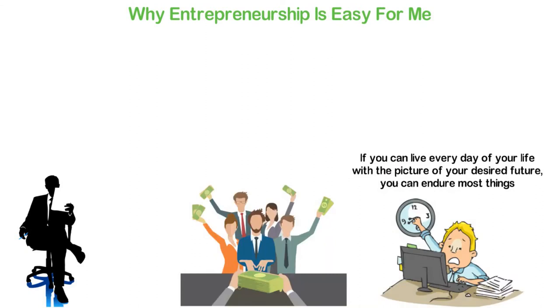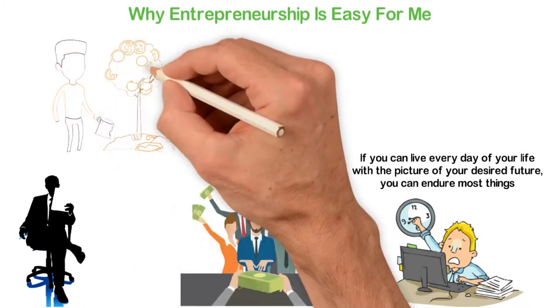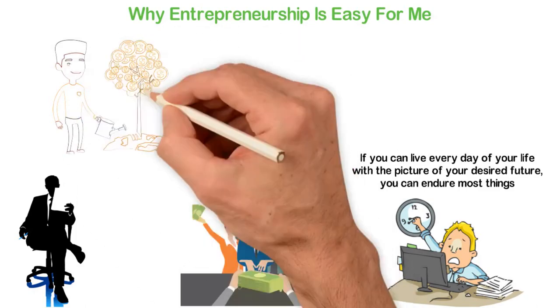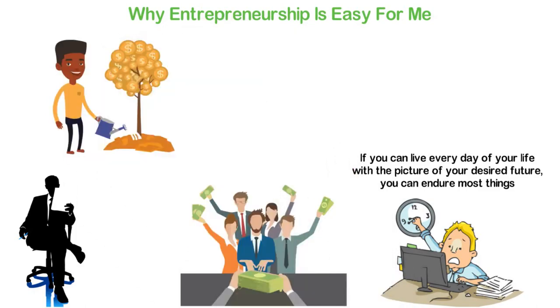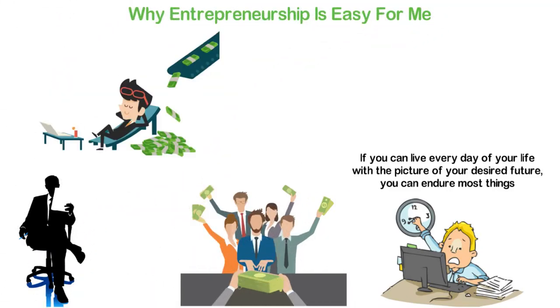No, entrepreneurs don't plant corns, so they don't have a harvest in 90 days. What entrepreneurs plant is cocoa and that means that they have to wait for five long years before any harvest but when the harvest starts coming in, entrepreneurs often make more money than they can ever spend in their entire life.